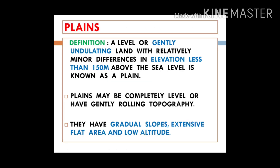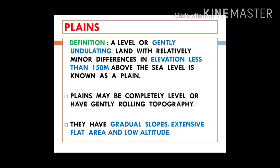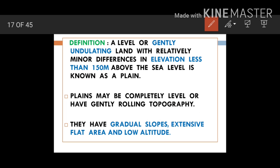Let us see the definition. A level or gently undulating land with relatively minor differences in elevation, less than 150 meters above sea level, is known as a plane. Planes may be completely level or have gently rolling topography. They have gradual slope, extensive flat areas, and low altitude.